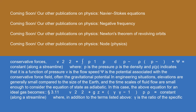Elevations are generally small compared to the size of the Earth, and the time scales of fluid flow are small enough to consider the equation of state as adiabatic. In this case, the above equation for an ideal gas becomes: v²/2 + gz + γ/(γ−1) · p/ρ = constant along a streamline.